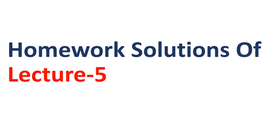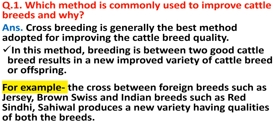Now the homework solutions from lecture five. Question one: Which method is commonly used to improve cattle breeds and why? Cross breeding is generally the best method for improving cattle breed quality. In cross breeding, two cattle breeds are bred together resulting in a new improved variety. For example, cross between foreign breeds such as Jersey and Brown Swiss with Indian breeds such as Red Sindhi and Sahiwal produces a new variety with qualities of both breeds.